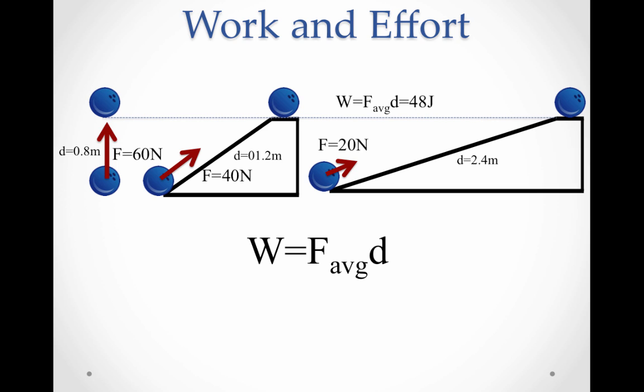Work is the average force times distance. But there's a lot of different ways to do work, and we could distribute the work differently so that the effort can actually be less and still do the same amount of work. The force could be less. The work that you're doing could be distributed over a greater distance. For example, we have a job to do, and that is to raise a bowling ball 0.8 meters. If I lift a bowling ball straight up 0.8 meters, I have to apply a force of 60 Newtons. So the work that I would do would be 60 times 0.8, or 48 joules of work.